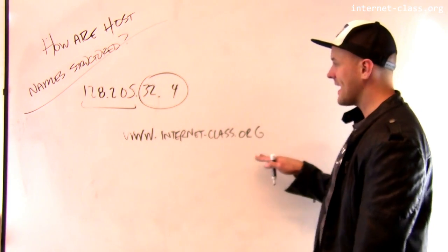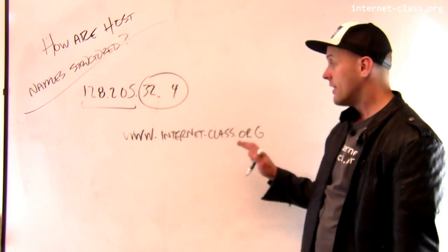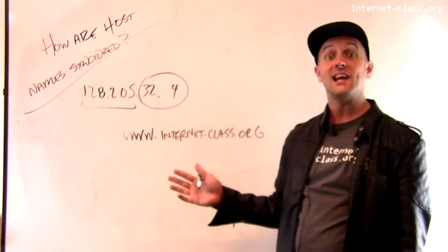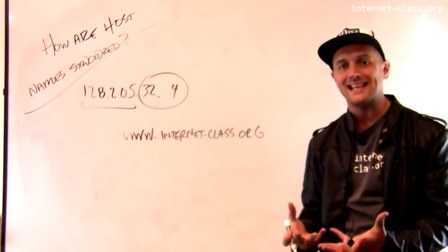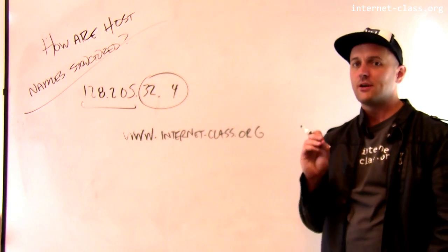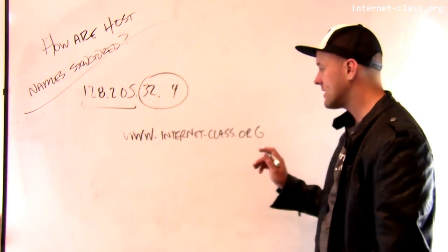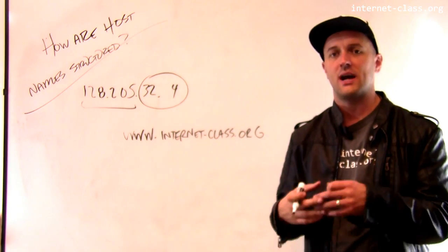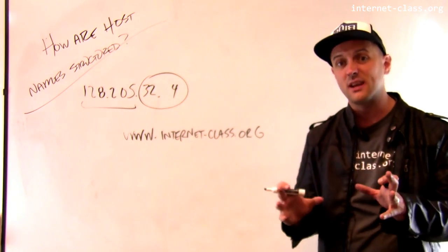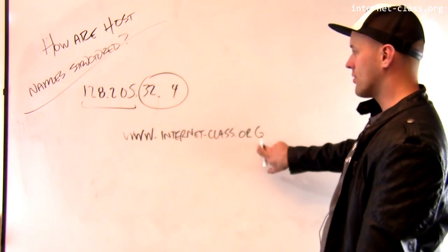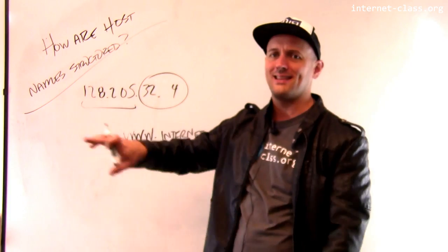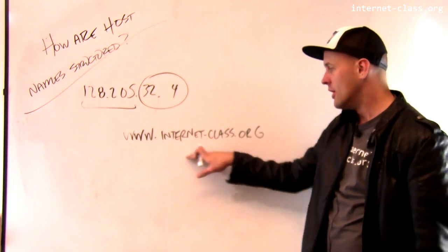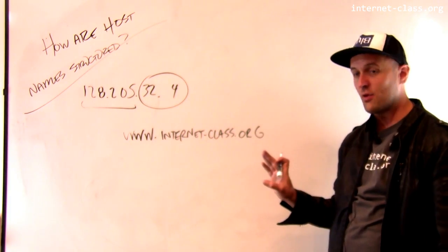So in this case, again, I have a similar hierarchical structure. First of all, I have this similar dotted notation, except what's in between the dots are names. Now don't get confused here. The dots here and the dots here are just naming conventions for how we format these addresses. They have nothing to do with each other, so it's not like org translates into 128 or something like that. These are just how we structured these, but they're structured in the same way.